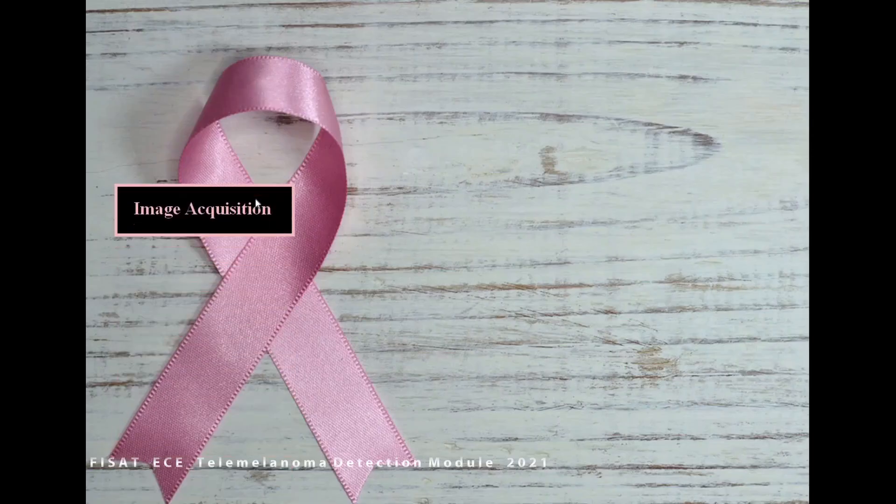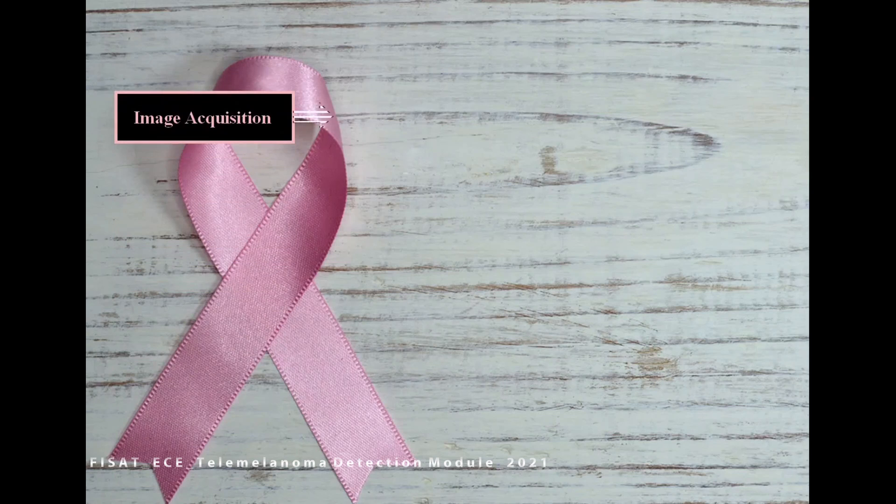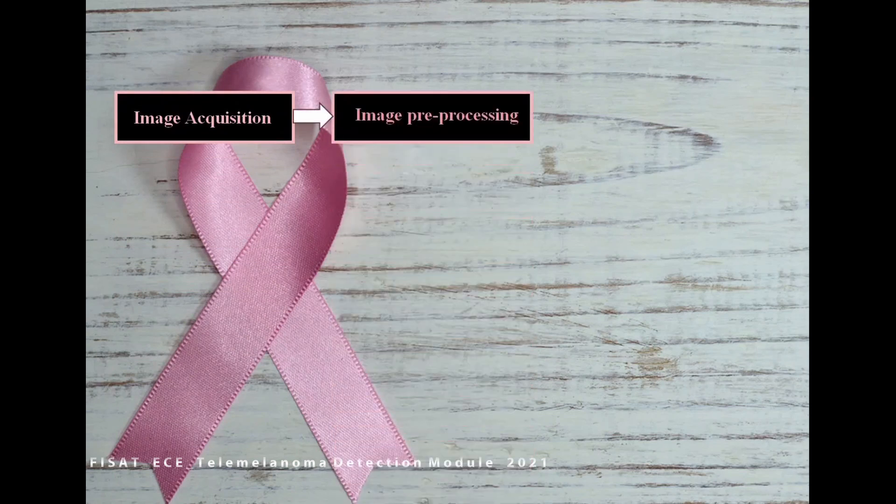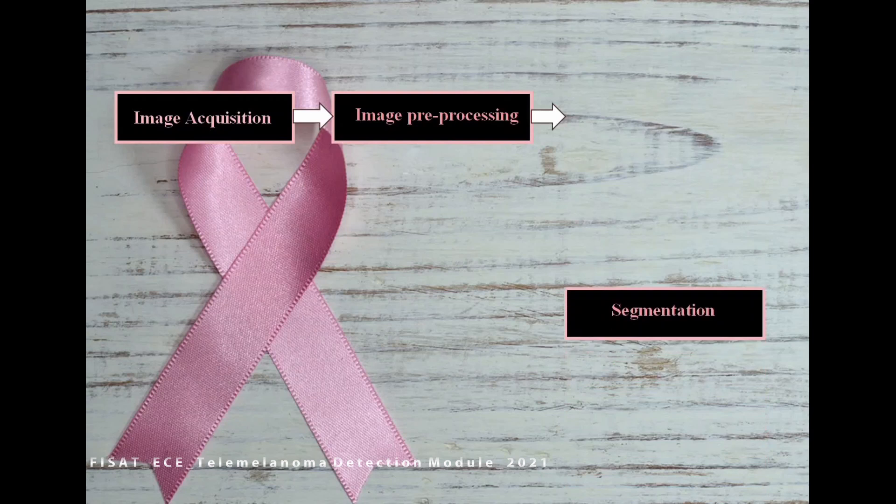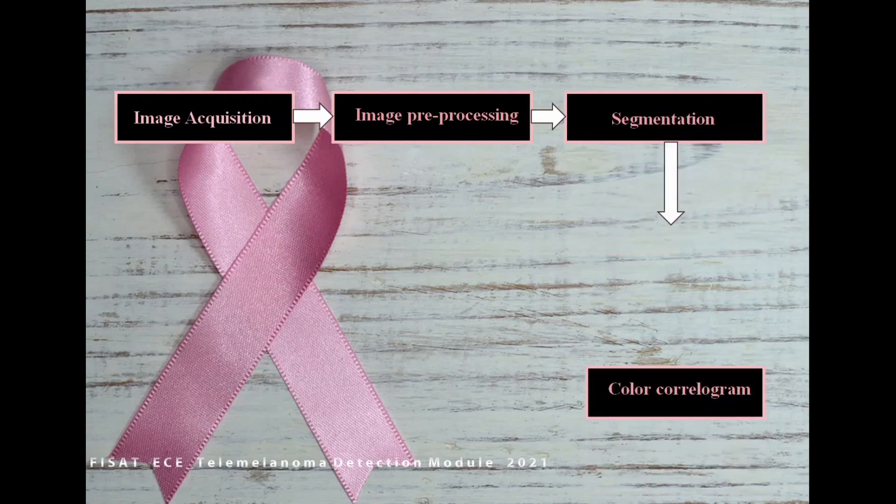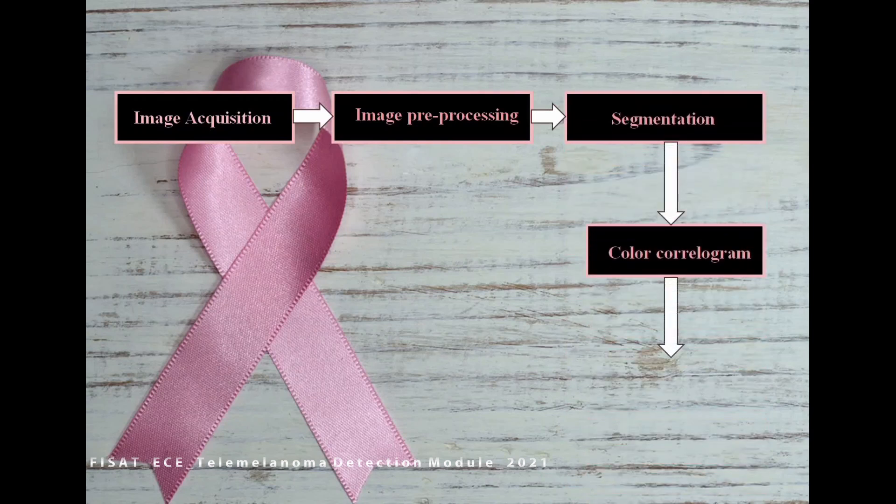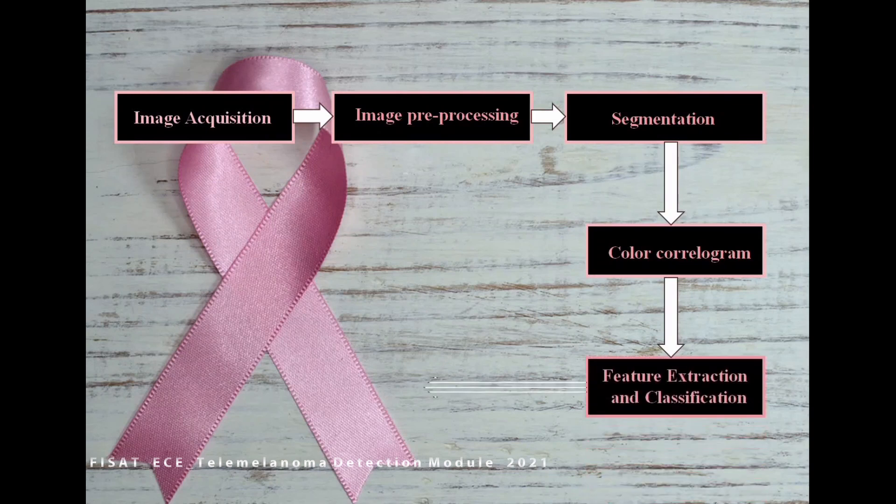Now let's see the block diagram. The first stage is image acquisition, then comes image pre-processing. The next stage is segmentation, then color correlogram. The next stage is feature extraction and classification, which classifies the given dataset into cancerous or non-cancerous.